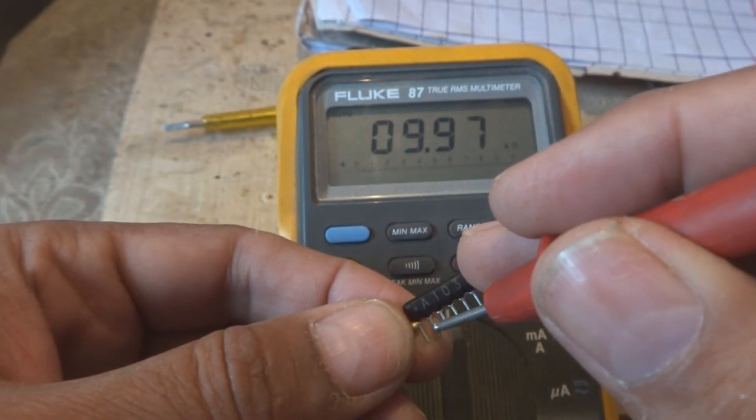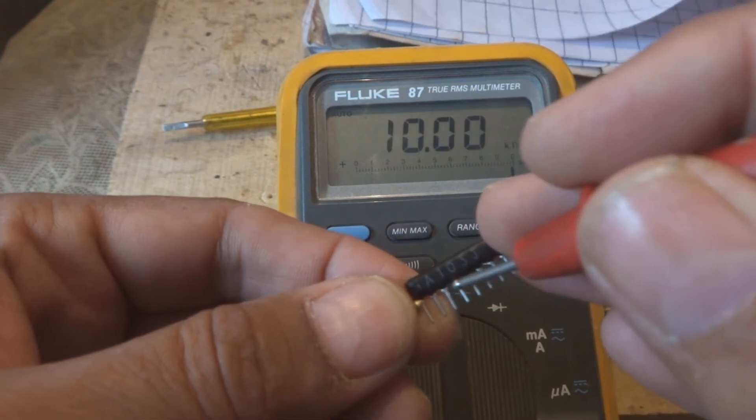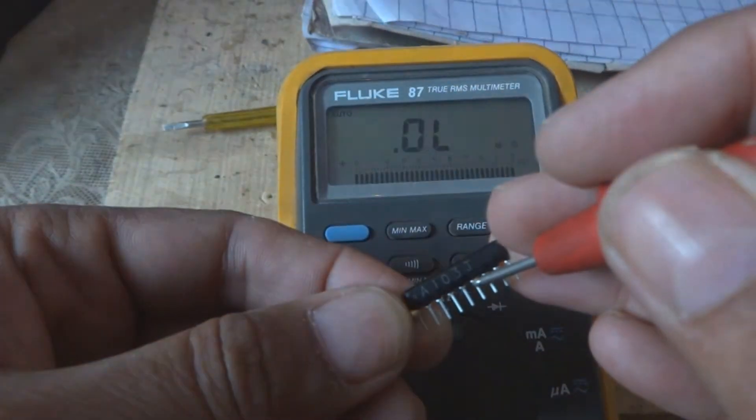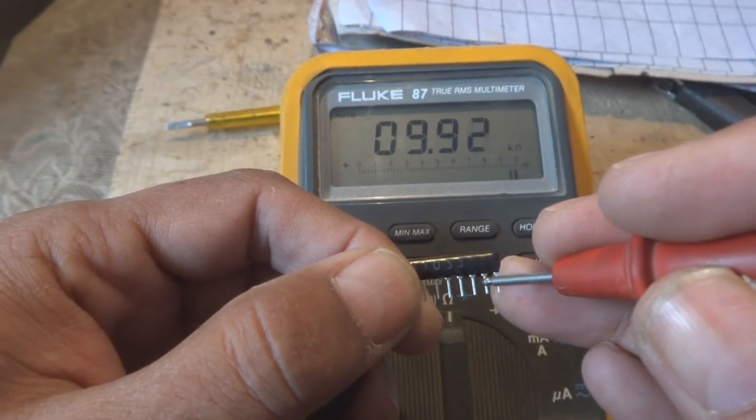We can get 9.97 kilo ohms, then the other, same, next 10 kilo ohm, 10 kilo ohm. These all are 10 kilo ohms you can see.